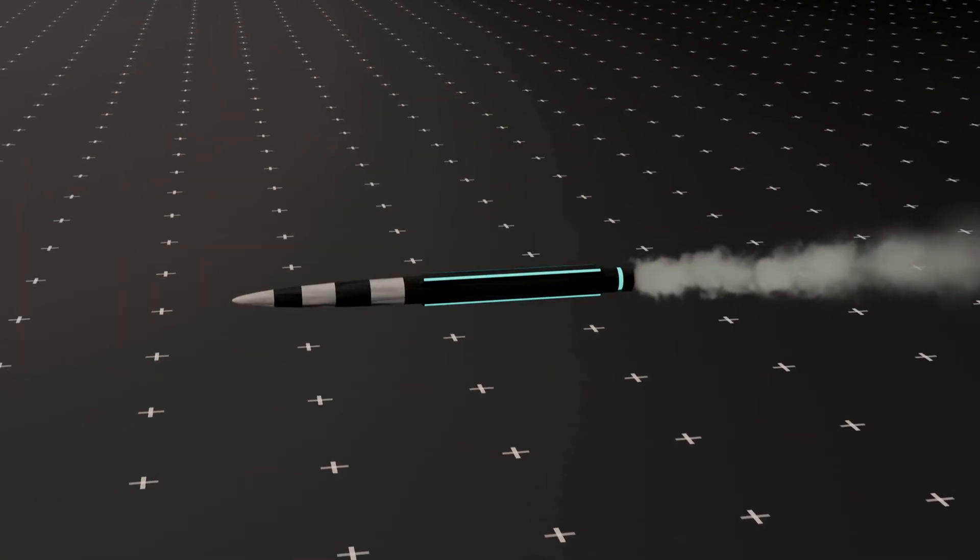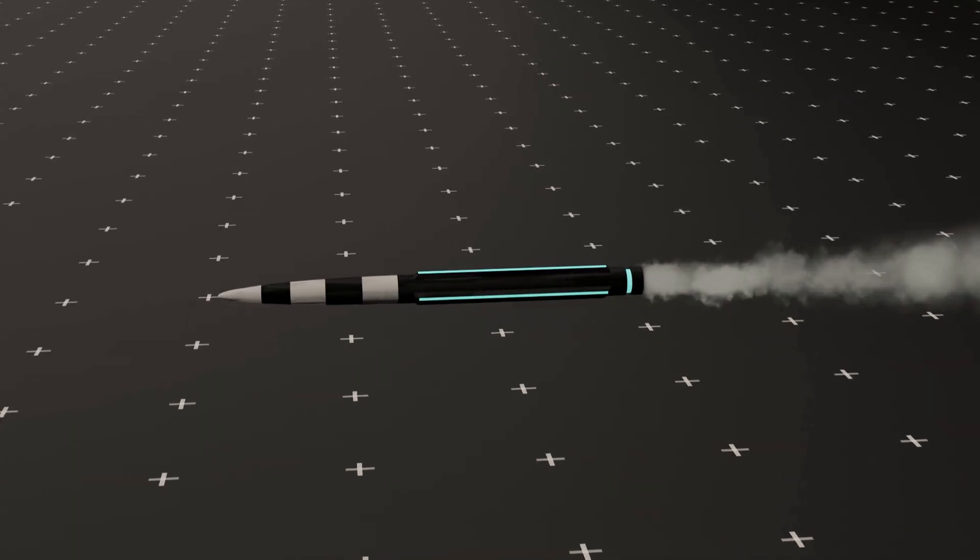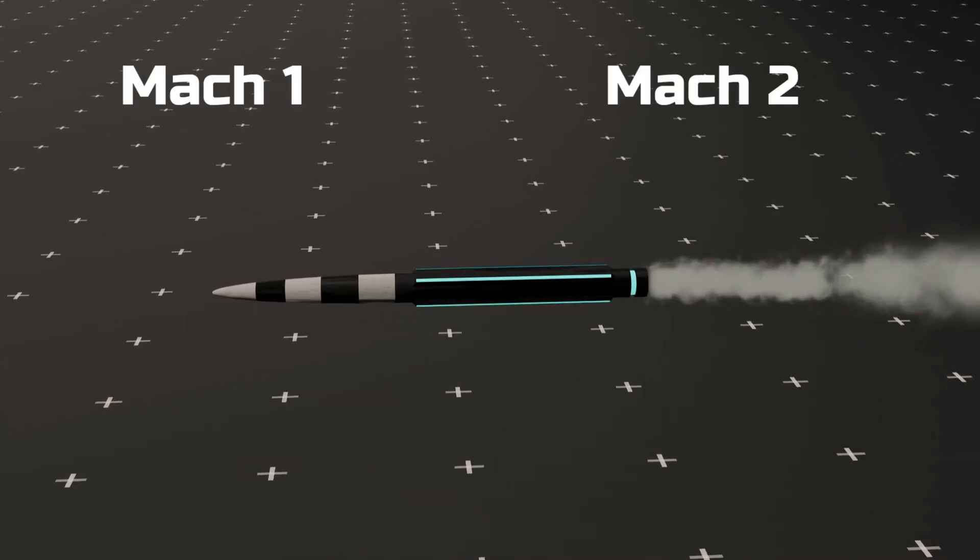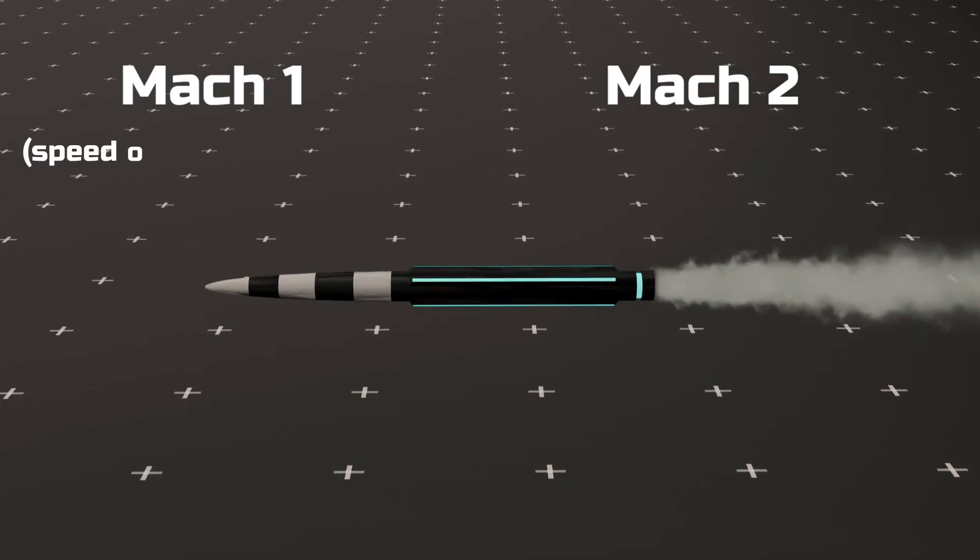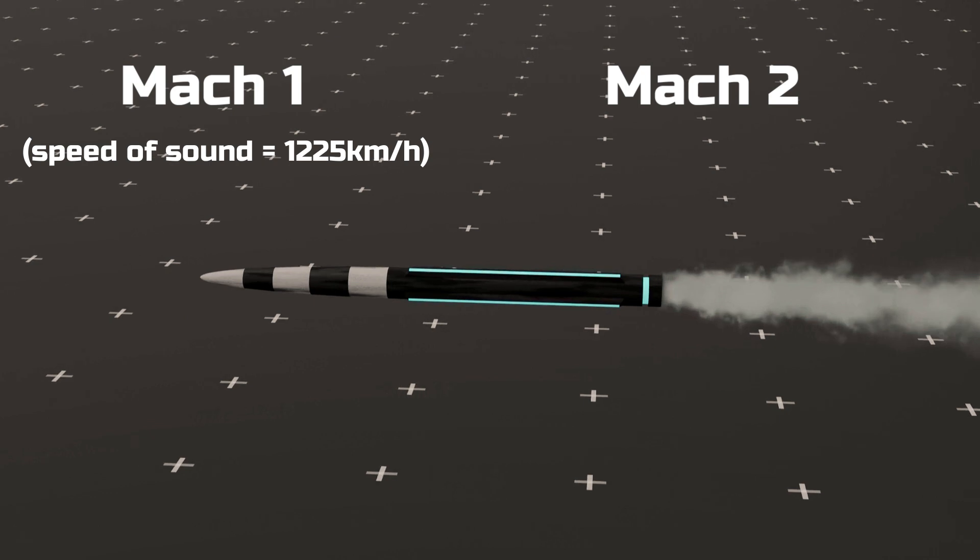To make this video easier to understand, let us first explore some basic terminologies. The speed of a missile is commonly measured using Mach numbers. Mach 1 refers to the speed of sound, approximately 1225 km per hour.